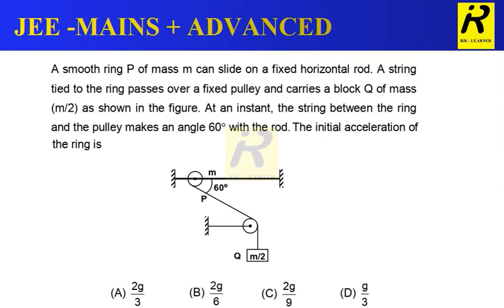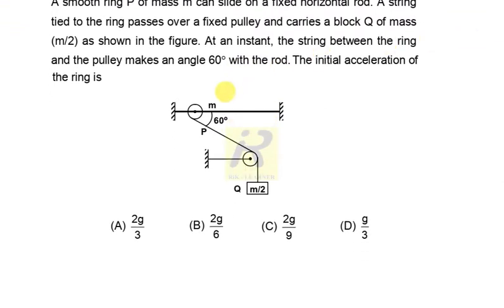So this is the question for which we are having a drawing and four options. So now what they asked is the initial acceleration of the ring. So initial acceleration of the ring, here is the ring. So for this ring, we have to find how much is the initial acceleration. So I take it in two parts, one is for the ring and another is for this block which is connected through this rope.